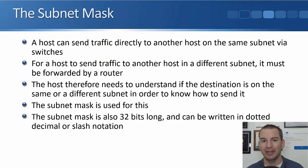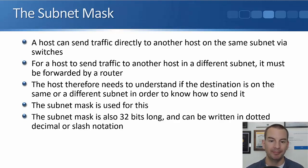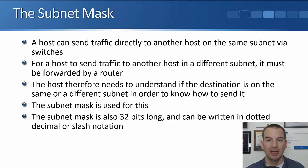A host can send traffic directly to another host on the same subnet via the switches they're attached to. But for a host to send traffic to a host in a different subnet, it must be forwarded by a router. The host needs to understand if the destination is on the same or a different subnet. If the destination is on the same subnet it sends directly; if it's on a different subnet it sends to the default gateway router.